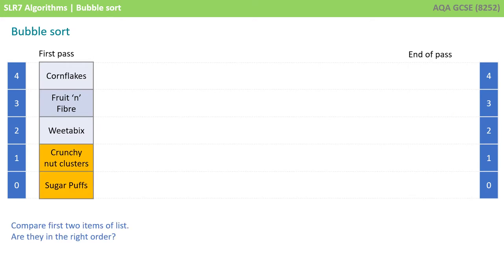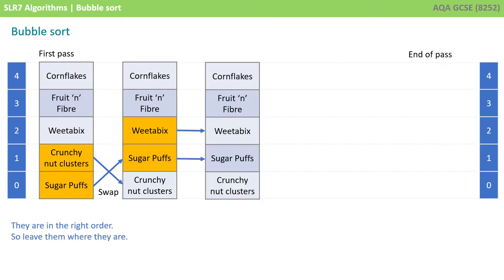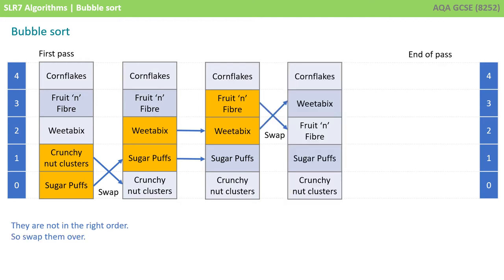We start by comparing the first two items of the list. Are they in the right order? They're not in the right order, so we swap them over. We now compare the next two items in our list, Weetabix and sugar puffs. Are they in the right order? Yes, they are, so we leave them exactly where they are. We now compare the next two items in our list: fruit and fibre and Weetabix. Are they in the right order? They're not in the right order, so we swap them over.